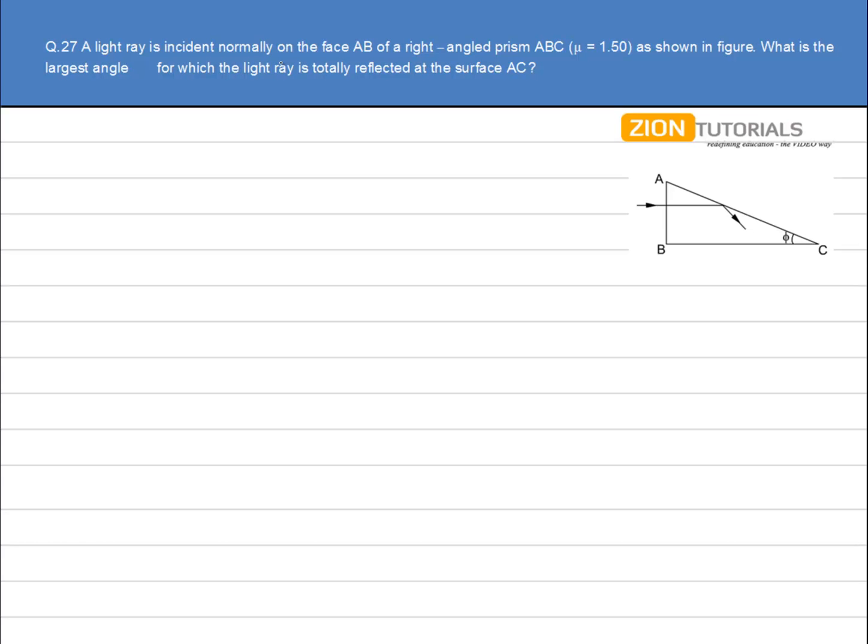A light ray is incident normally on face AB of a right-angle prism ABC as shown in the figure. What is the largest angle phi for which the light ray is totally reflected at surface AC?